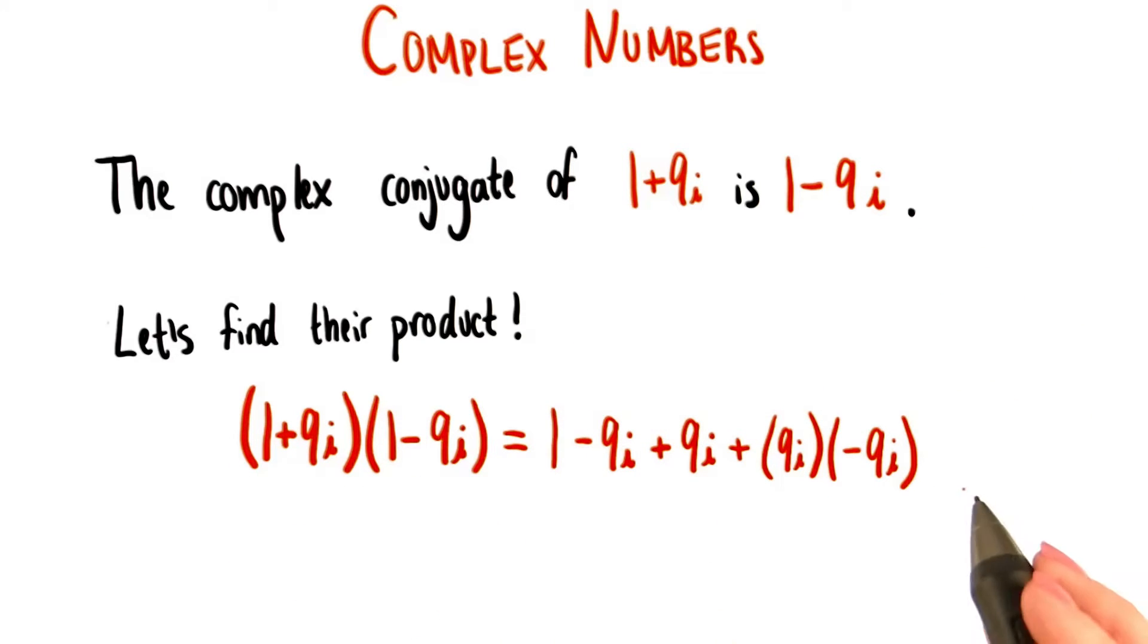Having a bunch of ones in here actually makes our multiplication pretty easy. I like that. Now we just need to simplify this final term and combine like terms.